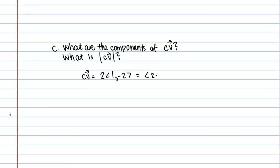Then this is going to become 2 times 1, 2 times negative 2. 2, negative 4 are going to be the components of this new vector, C times V.